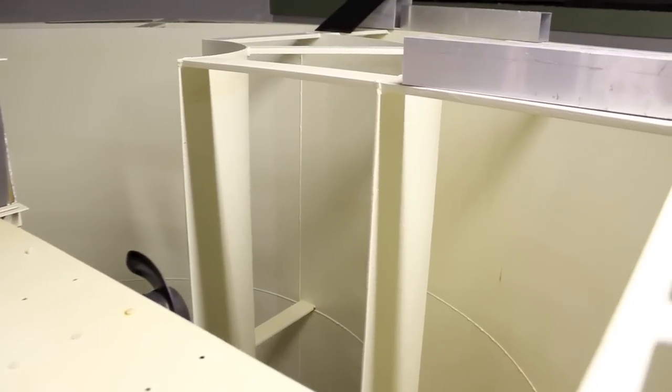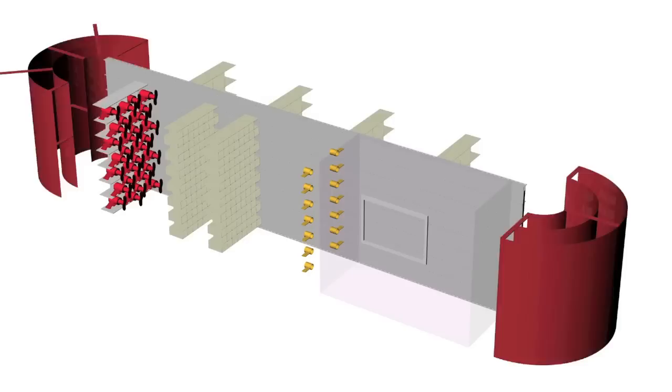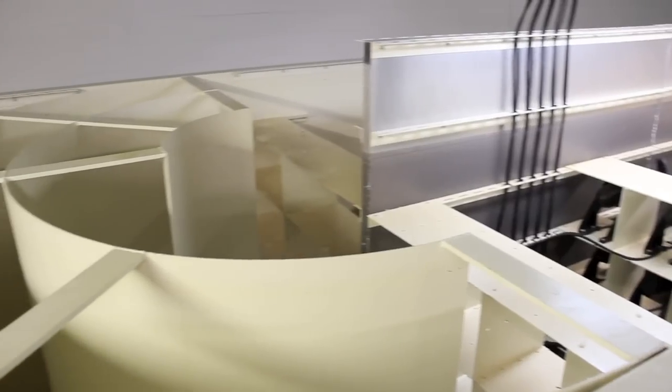At each end of the flume, nested half-pipe conduits provide water current reversal for the continuously flowing water.